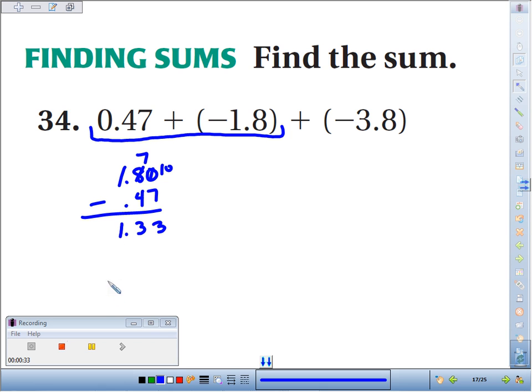So we've got 1.33, but remember, big minus small, the big symbol wins. The bigger absolute value is 1.8. Its symbol is negative, so we're looking at negative 1.33.